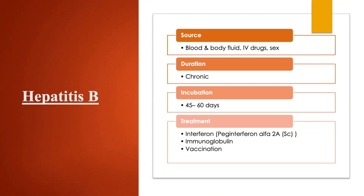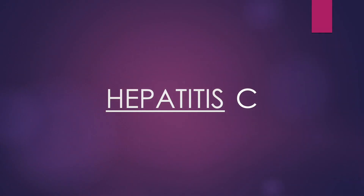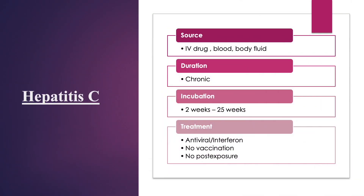For hepatitis B, sources stem from bodily fluids, blood exposure, IV drug use, and sexual intercourse. Hep B is a chronic condition and symptoms appear 45 to 60 days after exposure. Treatment includes interferon therapy and immunoglobulin therapy. There is also a vaccine available for hep B, and vaccination education is very important for clients.